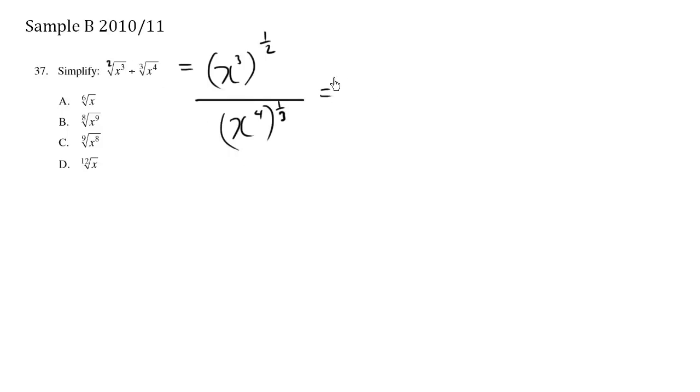So this is equal to—and there's many ways to do this, but I'm just going to work out the rule. Exponent, bracket, exponent means we multiply. So we have 3 times 1/2 is 3/2, all divided by x to the 4 times 1/3 is 4/3.